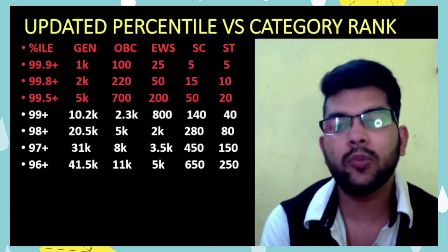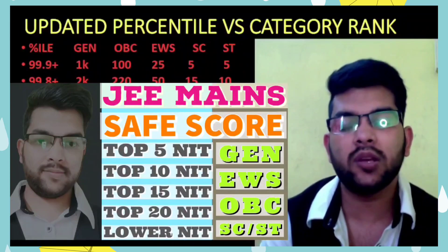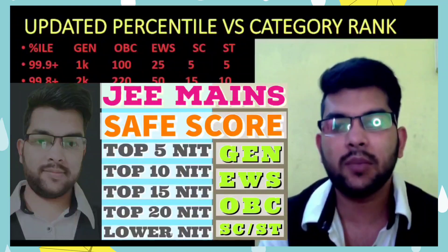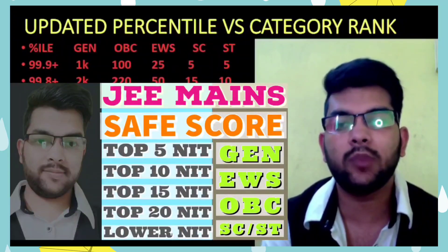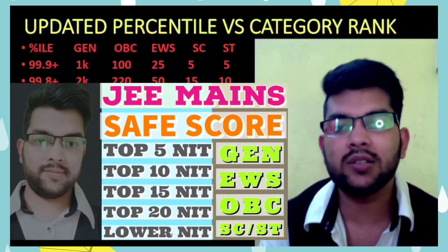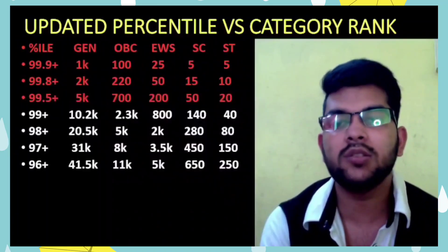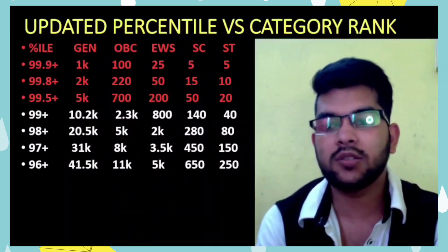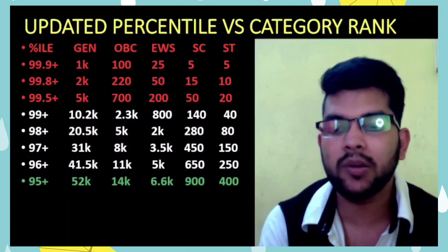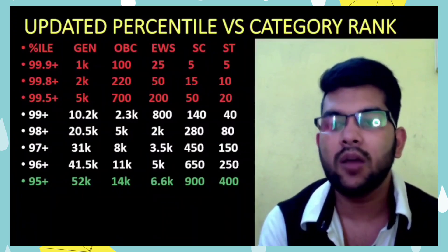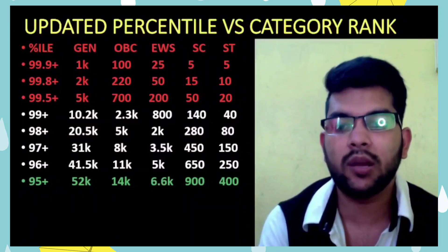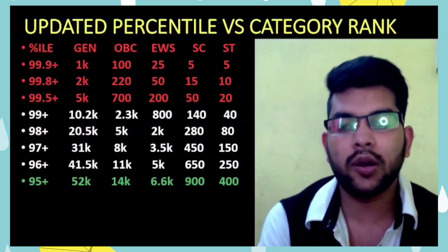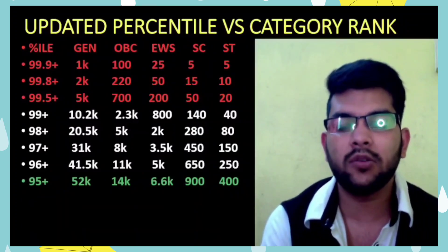I have also provided safe percentile videos for each type of NIT — top 5, top 10, top 15, top 20, and lower NITs — category-wise for all branches including CSE, ECE, Mechanical, Civil, Electrical. Check those in the i-button or description box. For 95+ percentile, General rank under 52,000, OBC under 14,000, EWS under 6,600, SC under 900, ST under 400.